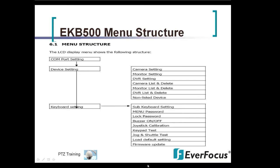Here's a quick breakdown of the EKB500 menu. You have your COM port setting, and then under device setting you have your camera settings, monitor settings, DVR settings, camera list and delete, monitor list and delete, DVR list and delete, and non-listed devices. Under keyboard settings you have sub keyboard setting, menu password, lock password, buzzer on and off, joystick calibration, keypad test, jog and shuttle test, and load default settings.